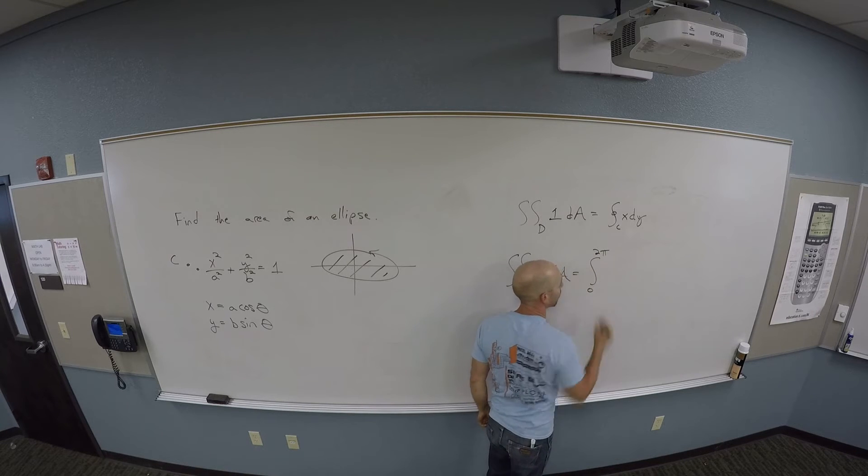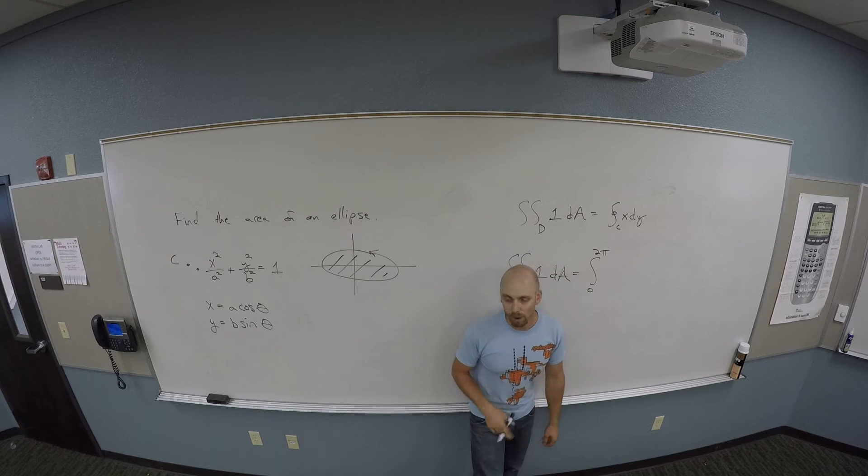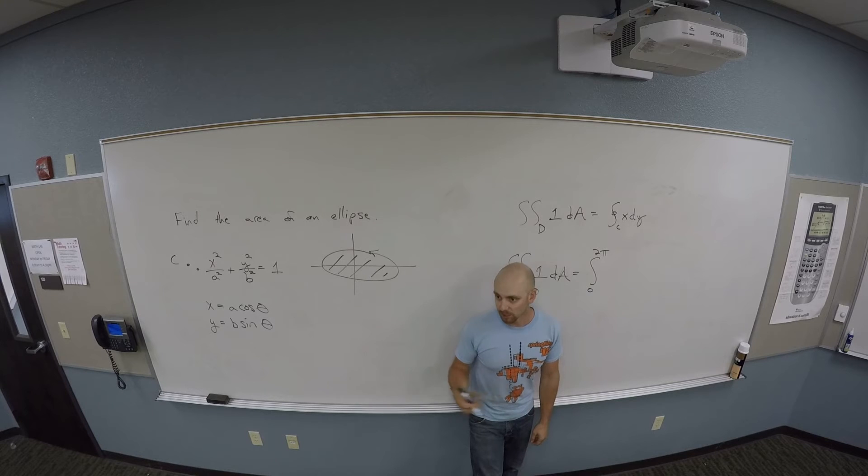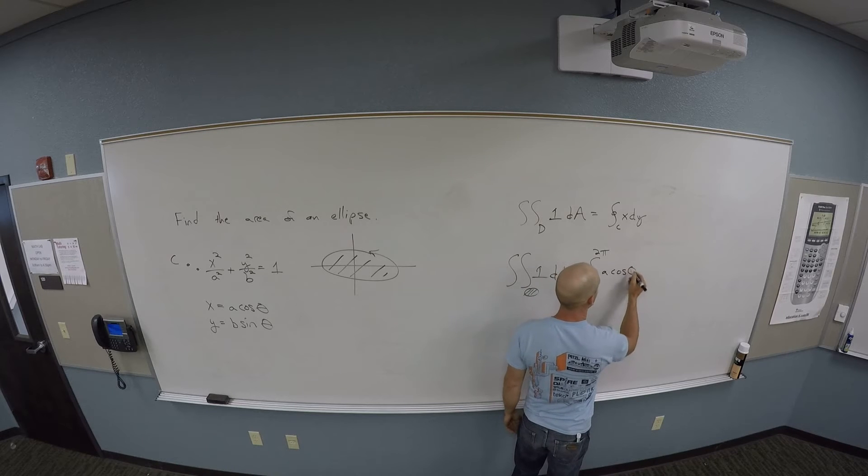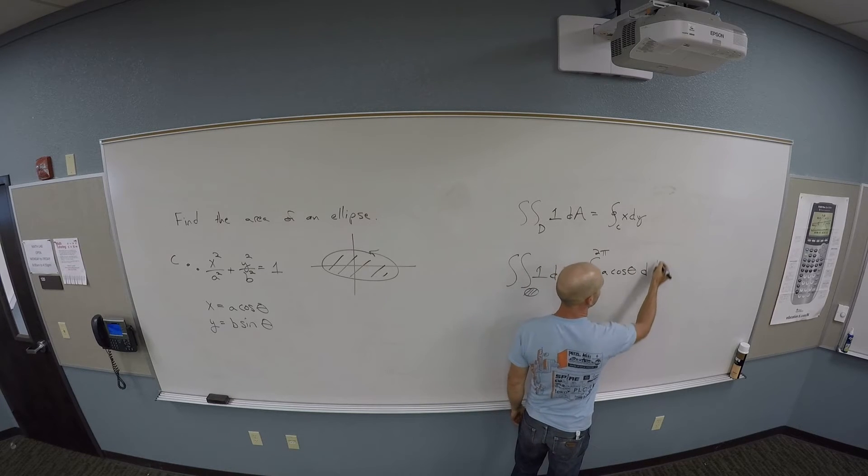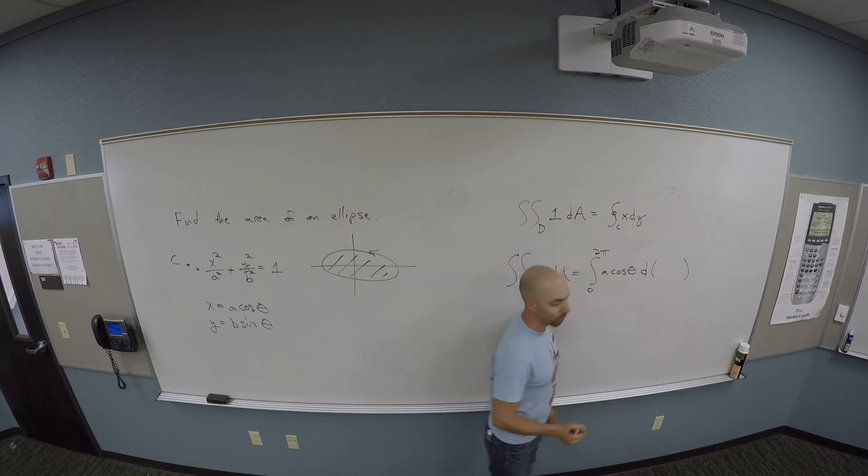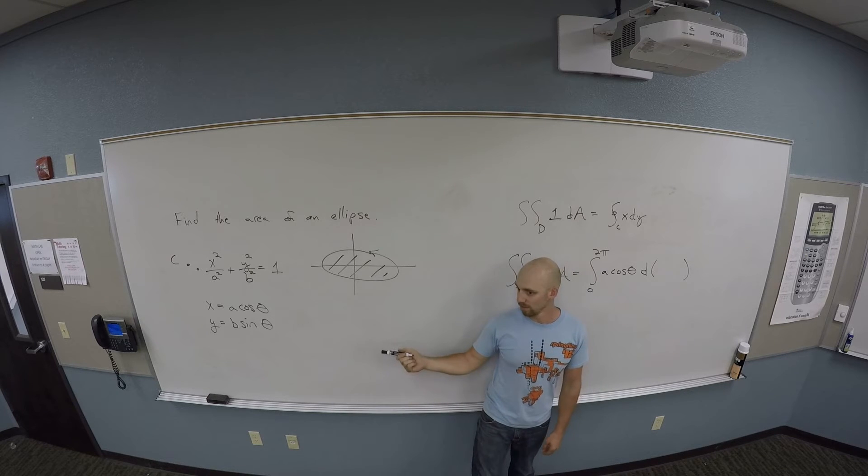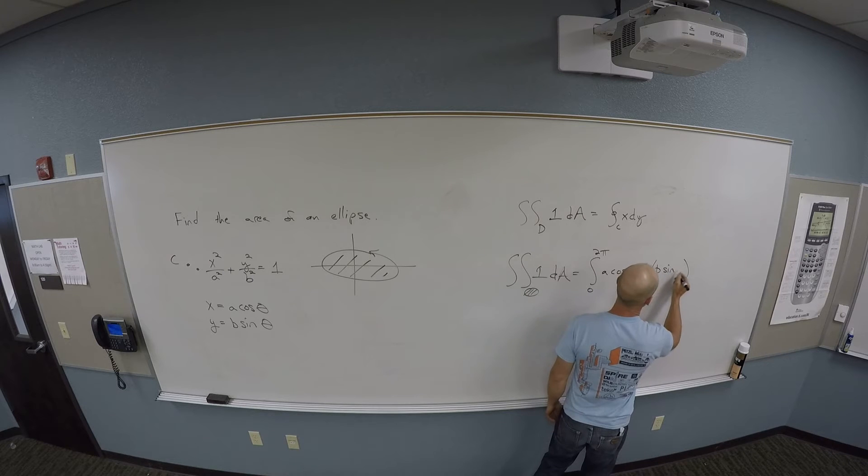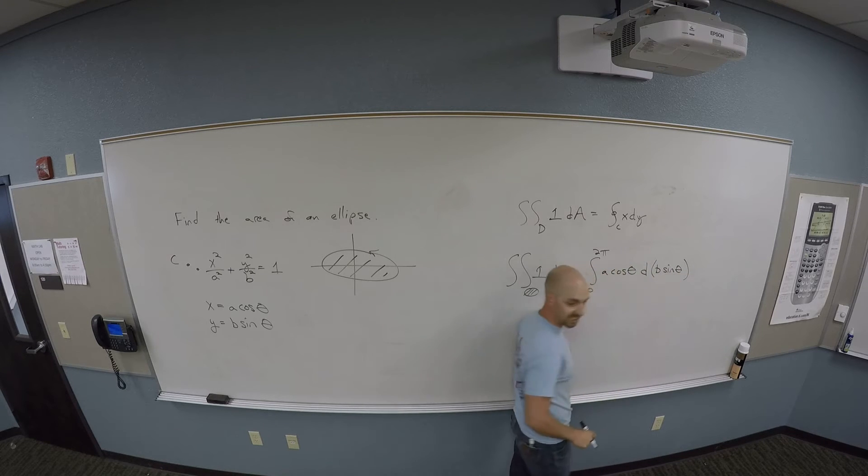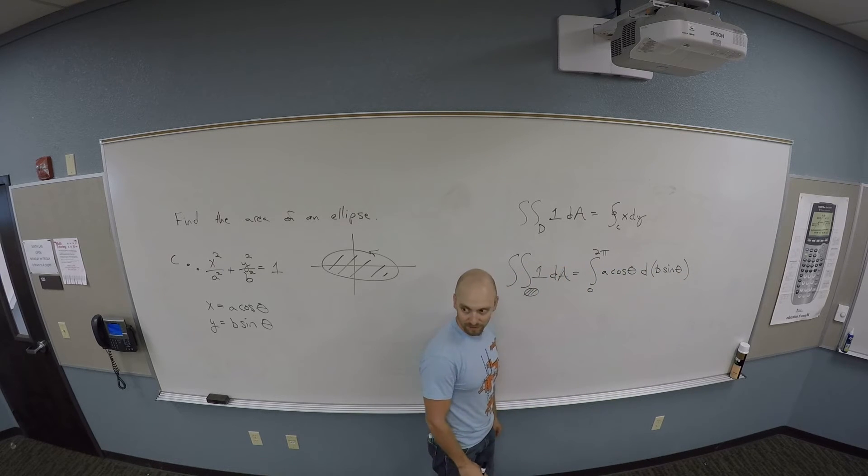What's x in terms of? A cosine theta. Perfect. It's a cosine theta, and then I need dy. What goes in for y? B sine theta. So I need to do d of b sine theta.